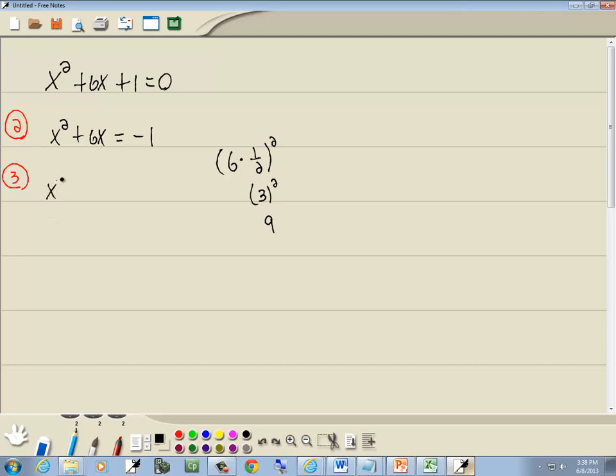Then add that to both sides. So we've got x squared plus 6x plus 9 equals negative 1 plus 9, which gives us x squared plus 6x plus 9 equals 8.